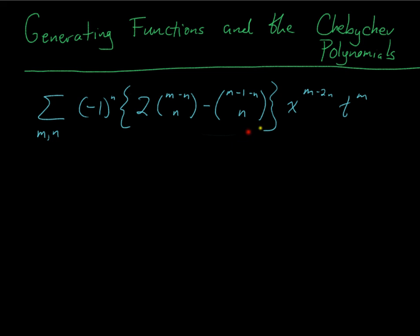So really the only thing left is to simplify this term in the brackets there. I kind of just like how the (m minus n) choose n looks. So I want to rewrite this guy in terms of that. So let's do that right quick. Well, if I take this guy, he's (m minus 1 minus n) factorial over (m minus 1 minus 2n) factorial n factorial.